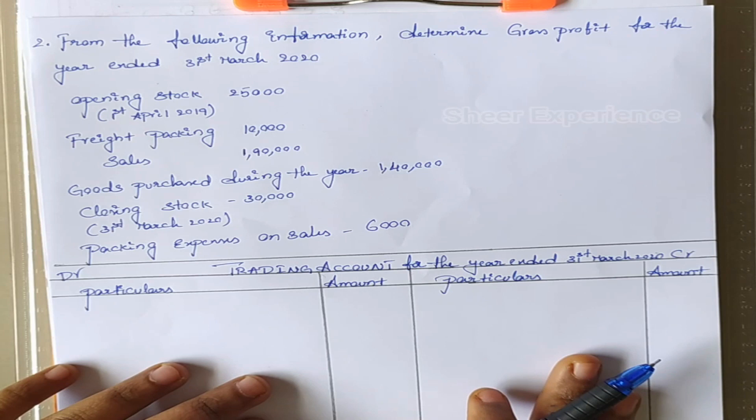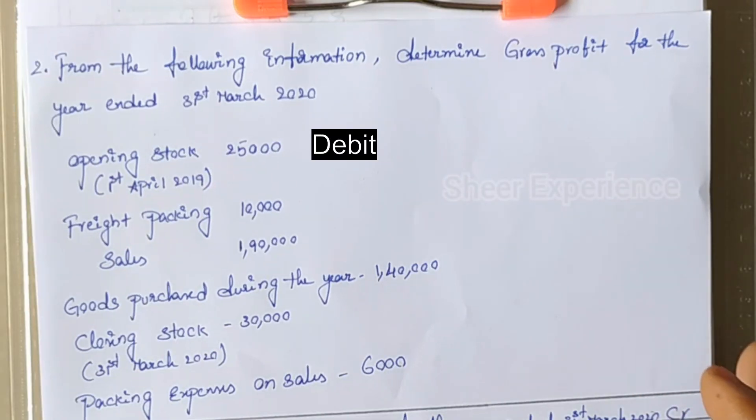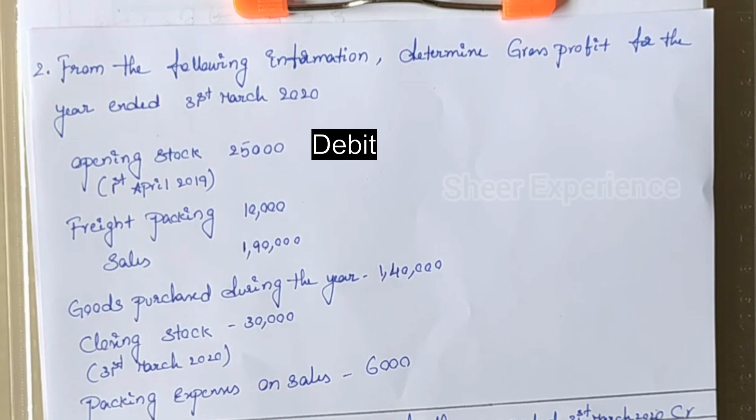We know that we have to mention the opening stock on the debit side. Next we have freight and packing charges, which is a direct expense — this comes on the debit side. Next is sales, which comes on the credit side. Next is goods purchased during the year, which is the net purchase value because purchase returns have not been given here.